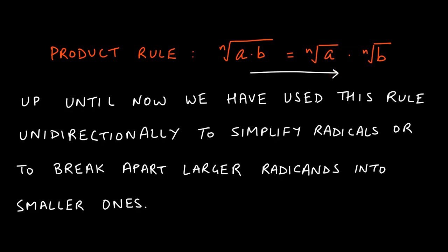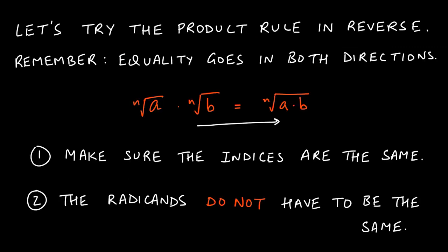Up until now we've almost exclusively used this rule in one direction to simplify radicals or break apart big radicands into smaller ones. Now let's use the rule in reverse. Since an equality works in both directions, in this section we'll talk about how to multiply two radicals together — going from two individually multiplied radicals and combining them back inside a single radical.